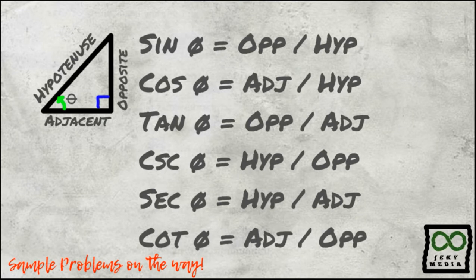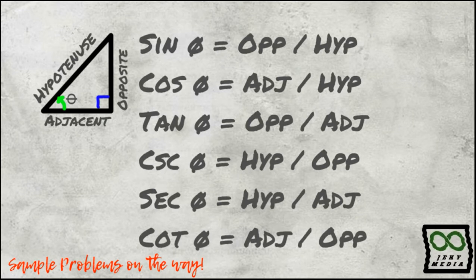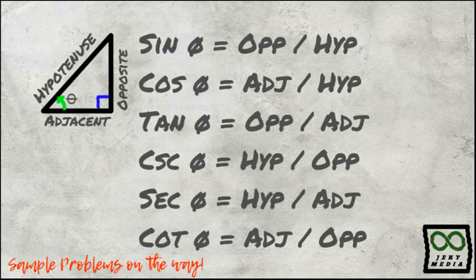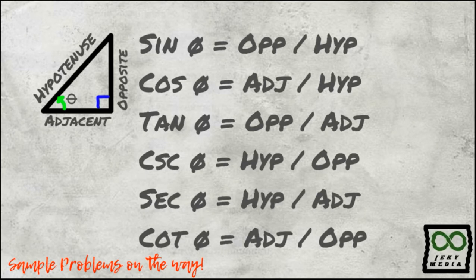Here are the six trigonometric functions. Sine theta: opposite over hypotenuse. Cosine theta: adjacent over hypotenuse. Tangent theta: opposite over adjacent. Cosecant theta: hypotenuse over opposite. Secant theta: hypotenuse over adjacent. Cotangent theta: adjacent over opposite.